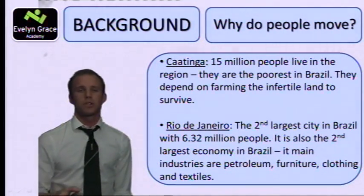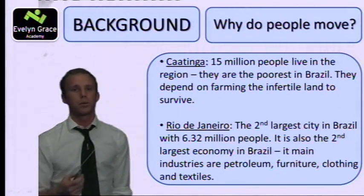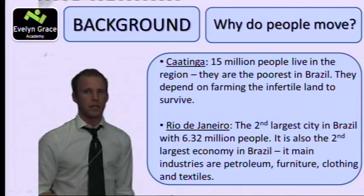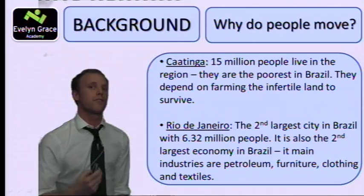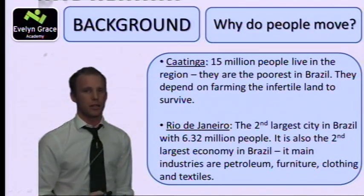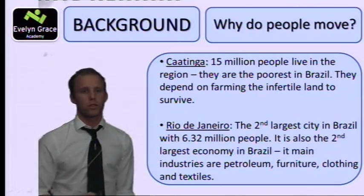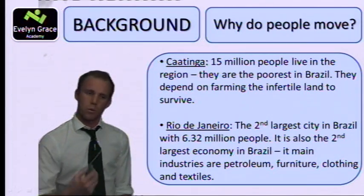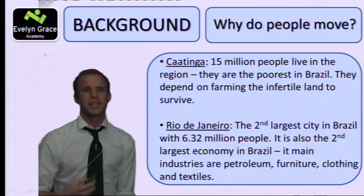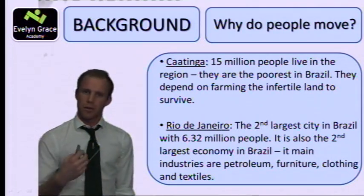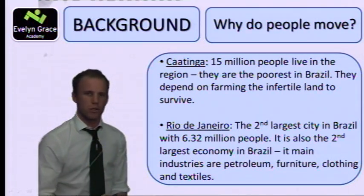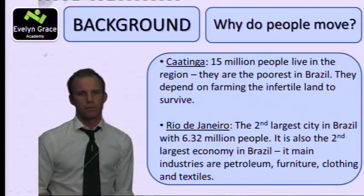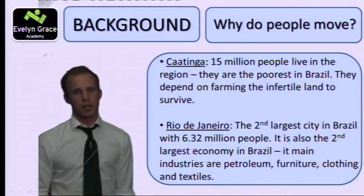So why do people move? One push factor pushing people out of Caatinga is that there are over 15 million people in the region, all relying on infertile soils. It's very much a farming community wanting to produce as many crops as possible, but the soils are infertile and don't always produce, so people aren't always able to make a living. This is one major push factor pushing people away from Caatinga.